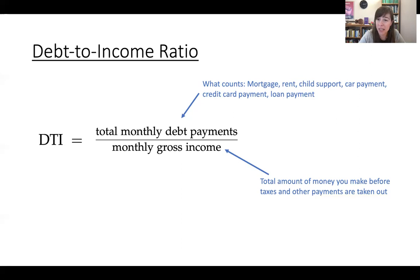Things that don't count are things like utilities, the internet, phone, gasoline, groceries. So even though all of those things you might need to survive or continue working, and you're paying them every month and you need to, they don't count in what is traditionally thought of as your total monthly debt payments.